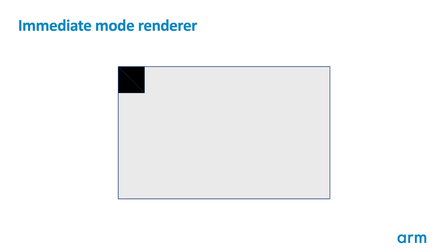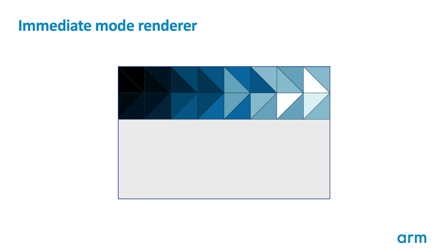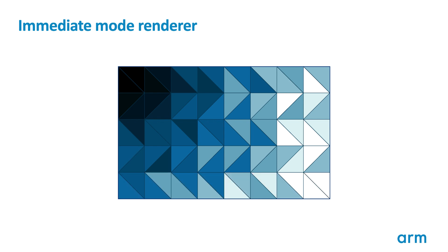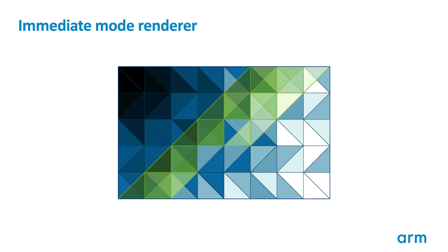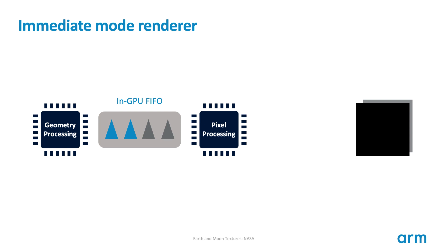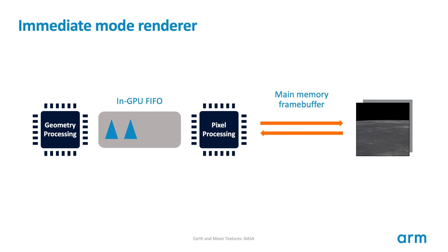This animation shows the behavior of a traditional immediate mode renderer. Primitives are processed in the order that they are specified by the application, which means the rendering sometimes will need to backtrack to revisit part of the screen touched by an earlier primitive. Immediate mode renderers link the geometry processing and the pixel processing stages using a simple first-in, first-out buffer, also called FIFO, inside of the GPU. Geometry processing will push the triangles into this buffer, pausing if the buffer completely fills up and waiting for pixel processing to catch up. Pixel processing will fetch primitives out of this buffer and shade them in the primitive stream order.